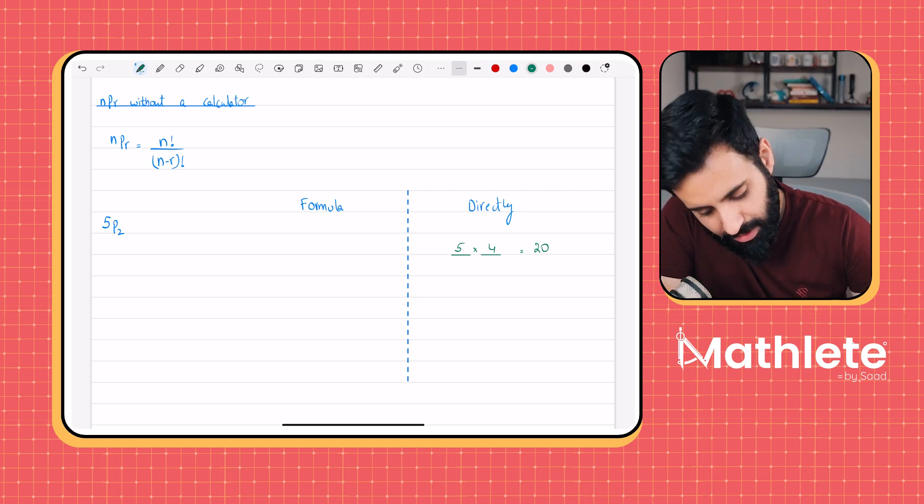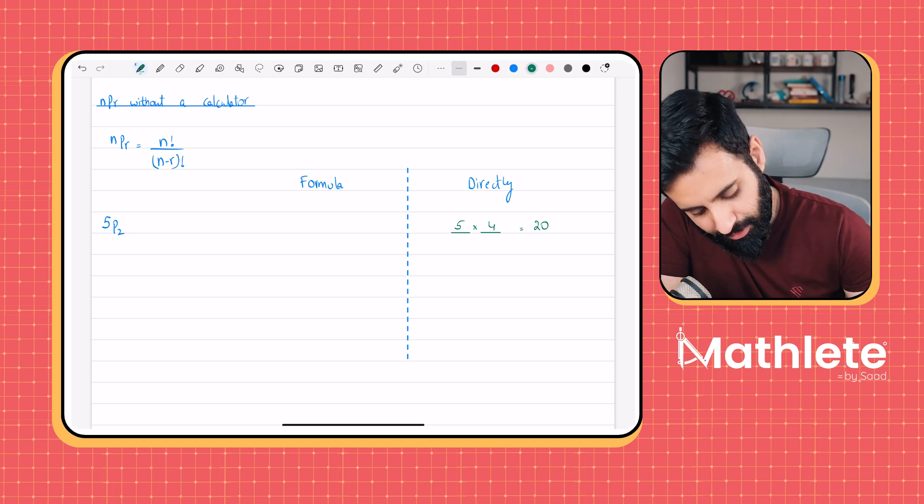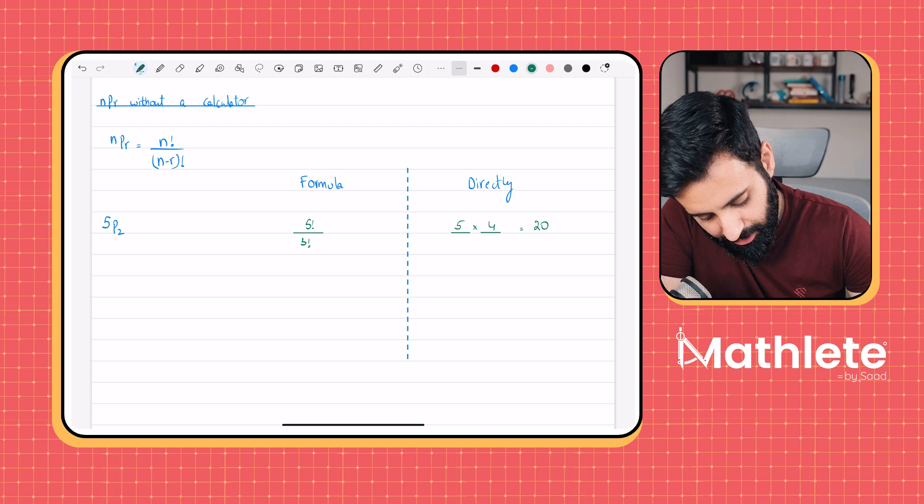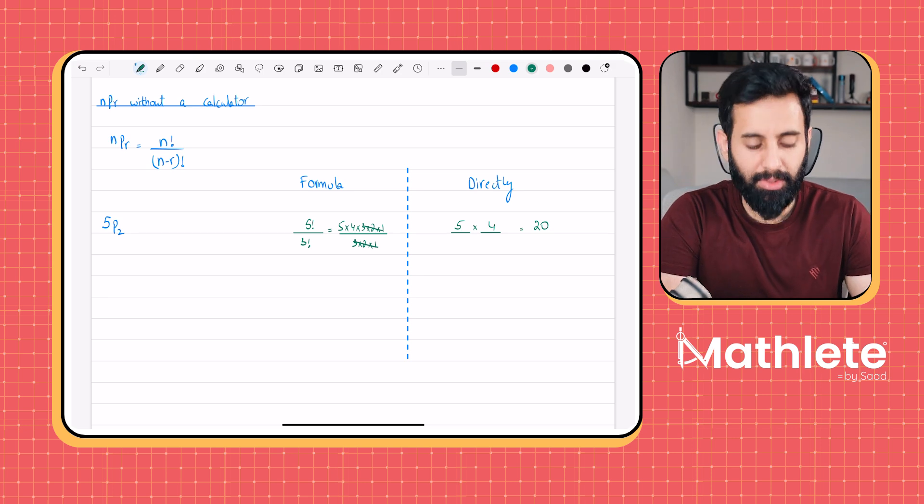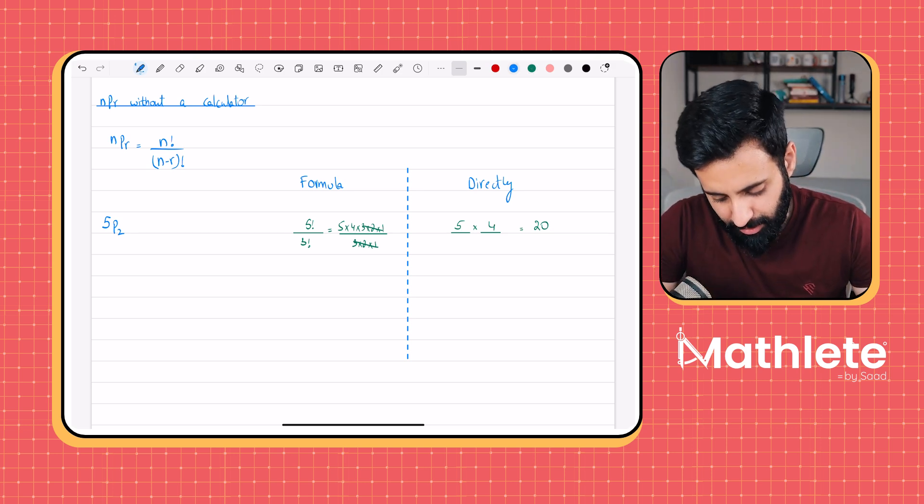If you were to do this with the formula, then this is what it would look like. You would do 5 factorial in the numerator. In the denominator, you would do 5 minus 2, which is 3 factorial. And then if you expand, you will notice that 5 factorial is 5 into 4 into 3 factorial. And the denominator is 3 times 2 times 1. And then ultimately, what you're left with is 5 times 4, which is 20. So that's the way to do it using the formula.